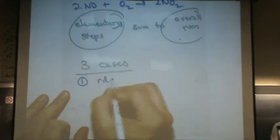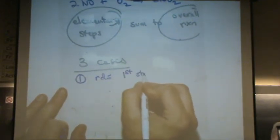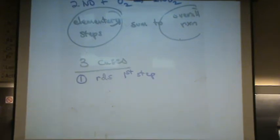One, if the RDS, rate determining step, is the first step. Remember there could be five, six, three, ten steps, elementary steps. If the rate determining step is the first step in a series of reactions, that's the easiest. And I'll show you an example a little bit.